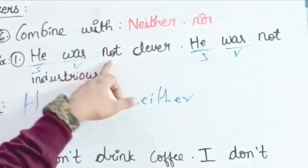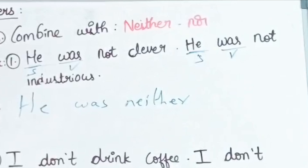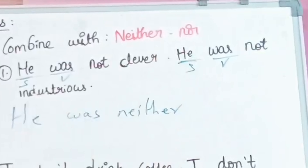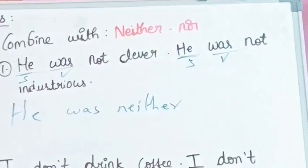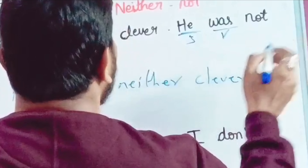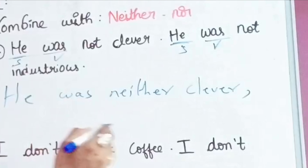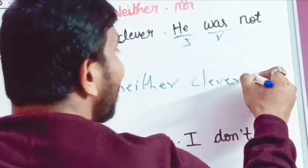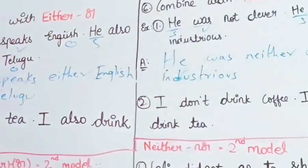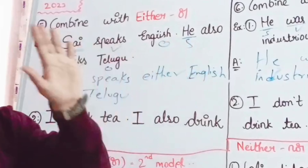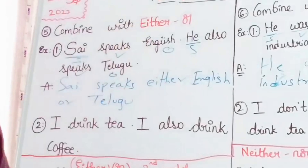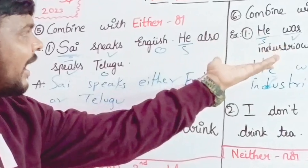Neither is negative. In the front, the other is negative — one negative. Neither is negative, complete — 'not' is already included. So neither is clever — He was neither clever. Full stop place is negative. Nor, industrious. Same rule: neither is negative, so we don't add another 'not'.